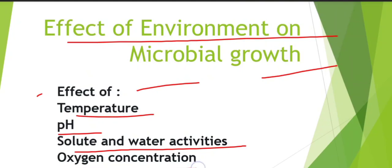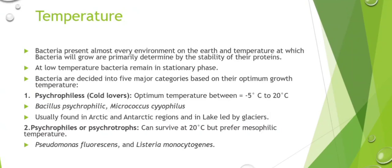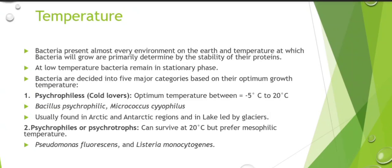Let's start with temperature. Temperature plays a very crucial role for every organism, and the same is true for microorganisms. Bacteria can represent almost all environments — cold temperature, high temperature. This depends on the stability of their proteins — which temperature their protein stability favors. In low temperature conditions, bacteria always remain in the stationary phase. This is why we refrigerate food products — so that bacterial growth does not increase further and remains stable.